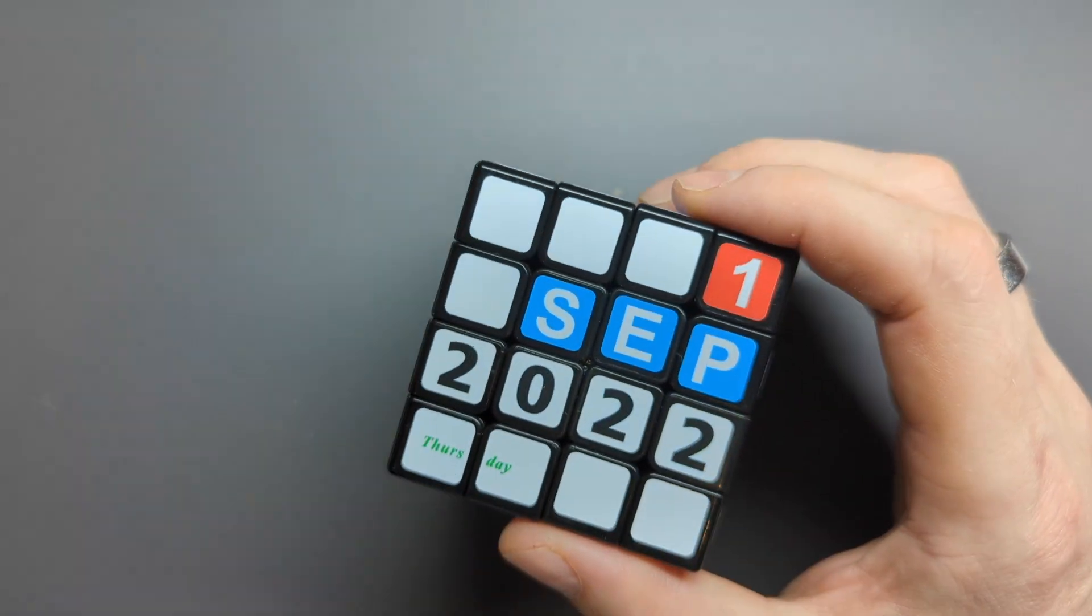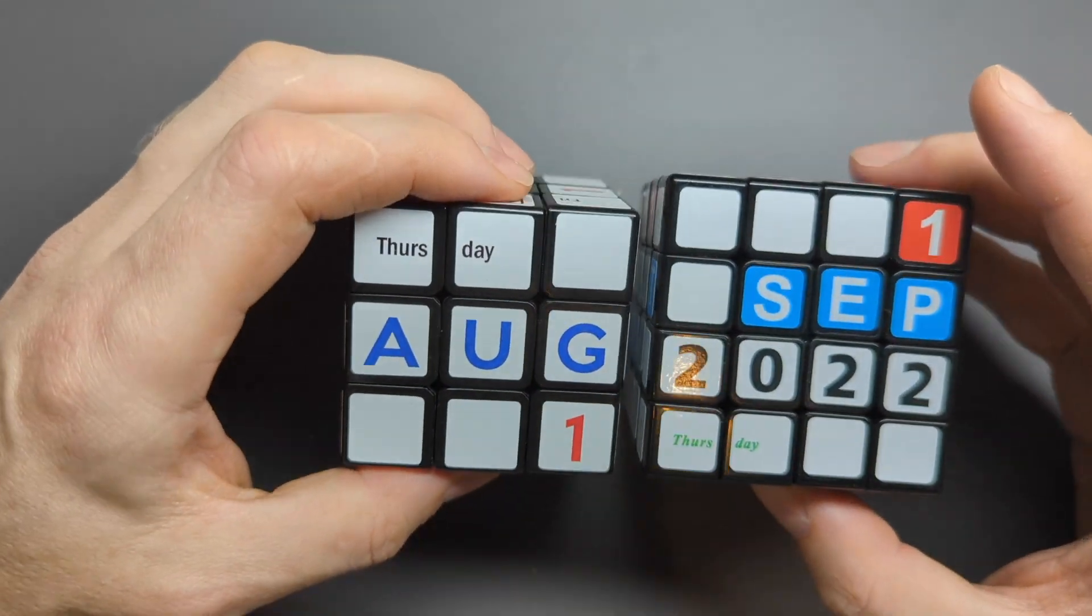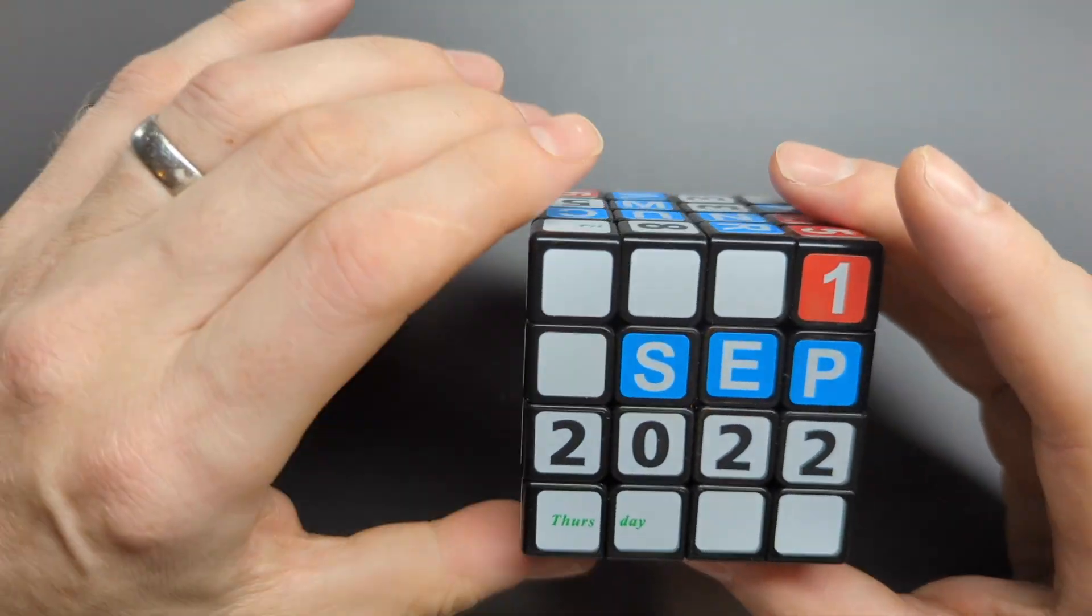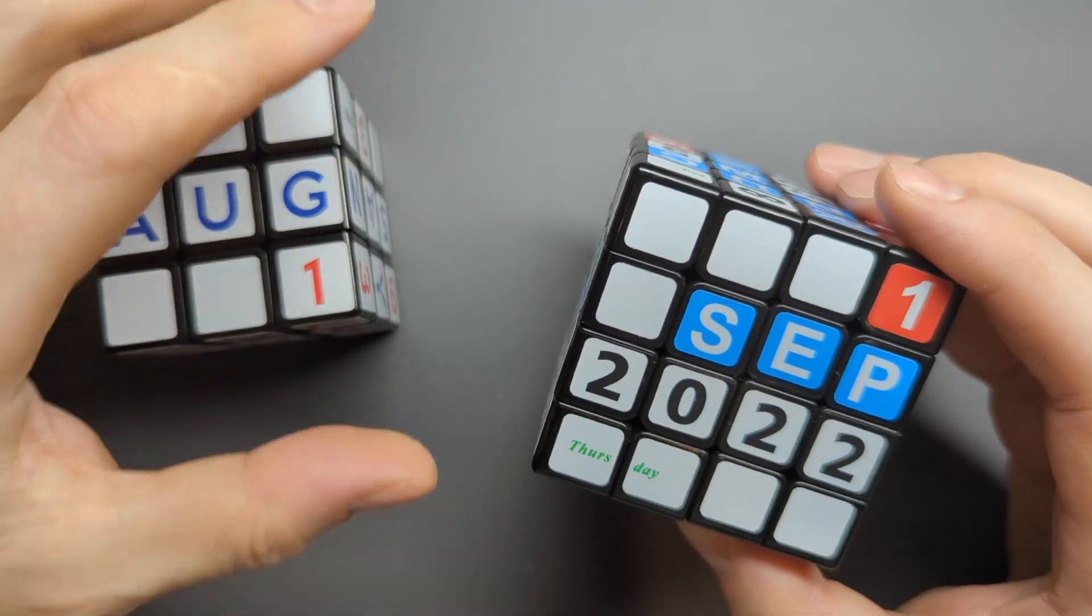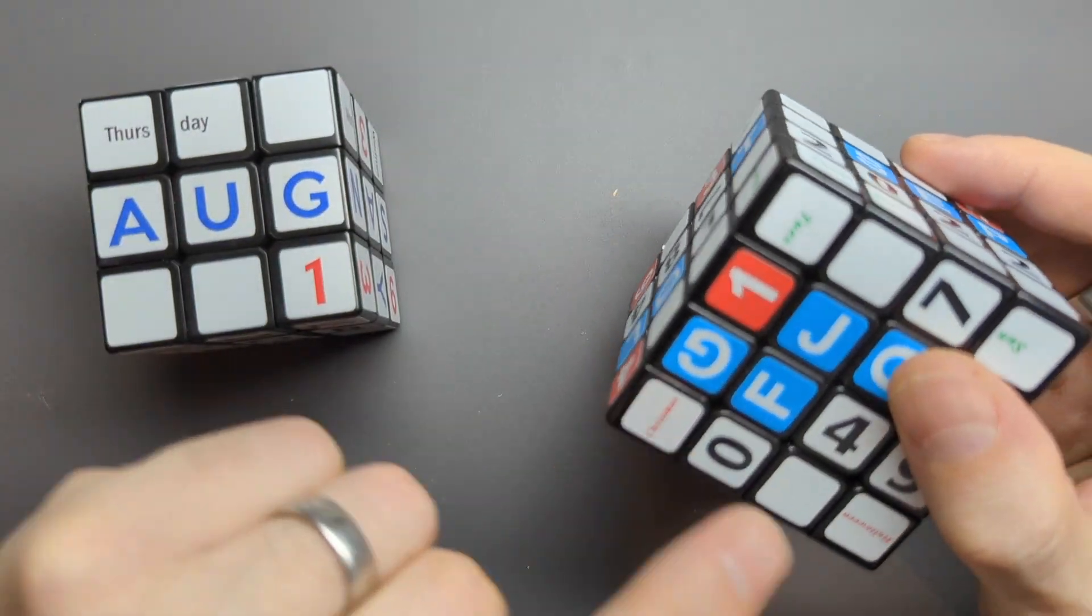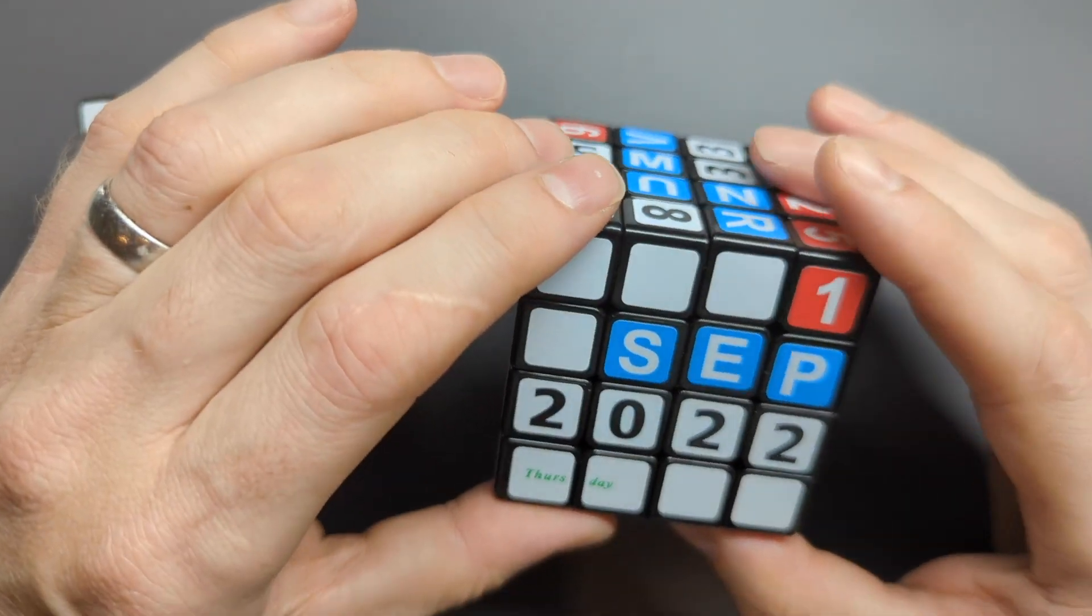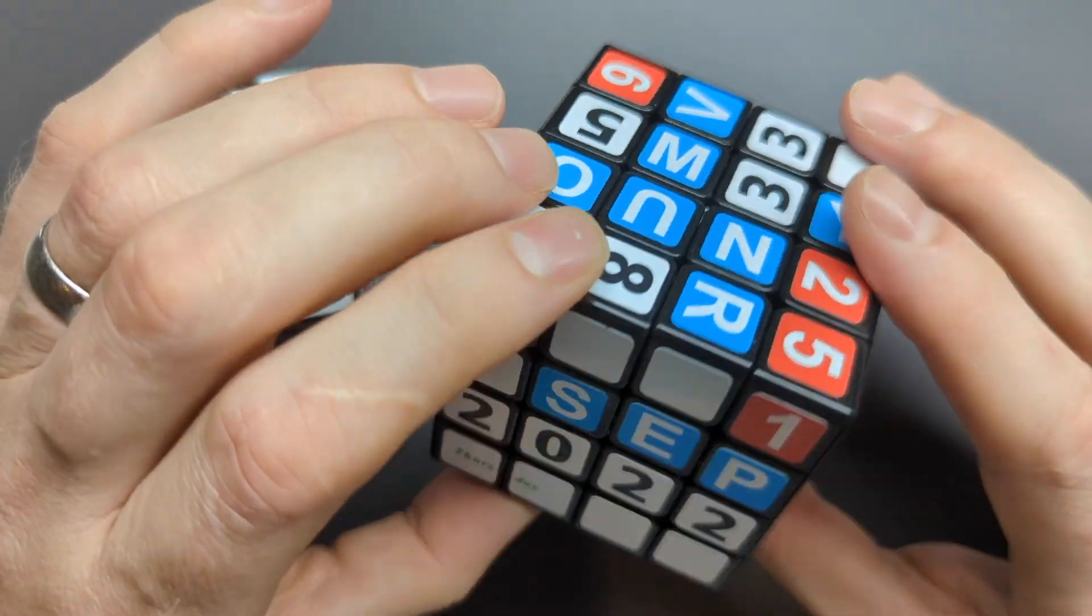I've always really liked the 3x3x3 calendar cube, but when I saw one of these online years ago, it just seemed so much richer because you can put the year in, and I like the little gimmick of these extra days as well. But they were always really hard to get hold of.